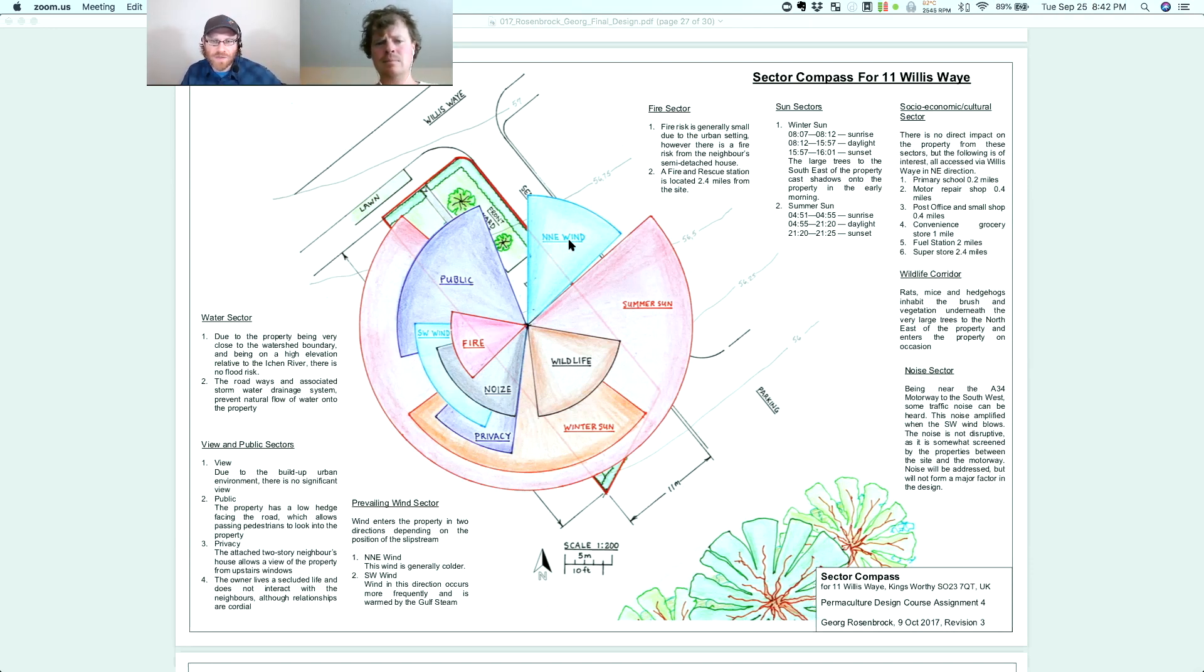So they've really gone through them all. They've shown us the north-northeast wind, the summer sun, the winter sun, the wildlife, the fire, the noise. Noise with a Z, it's very important. Privacy, public. And they've given us a description. And they've done it all on one map. Very excited about this, folks. Very excited. You use two maps, I'm less excited. One map, very excited. So they've gone into it, so water sector, due to the property being very close to the watershed boundary and being on a high elevation relative to Itchin River, there is no flood risk. Great. They've explained why there isn't a flood sector. Awesome.